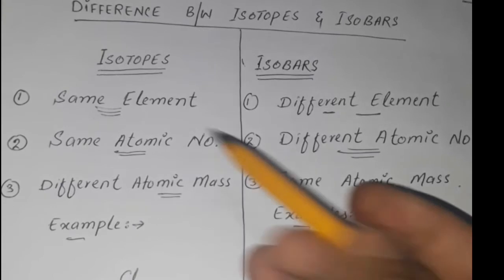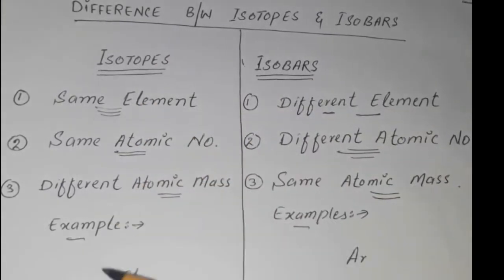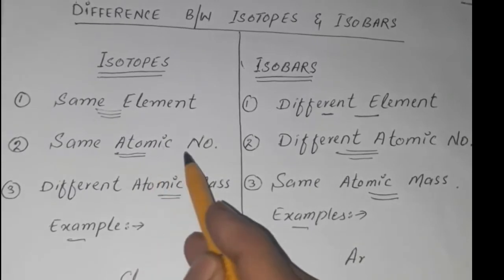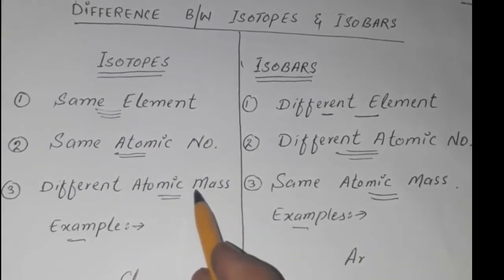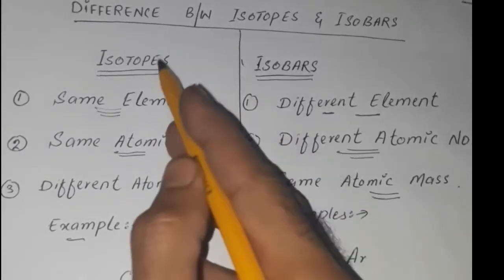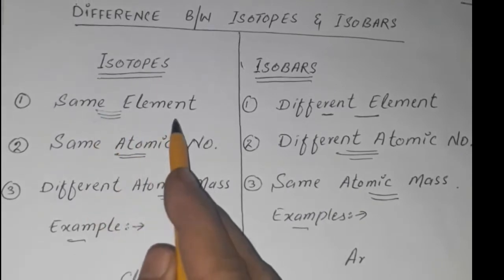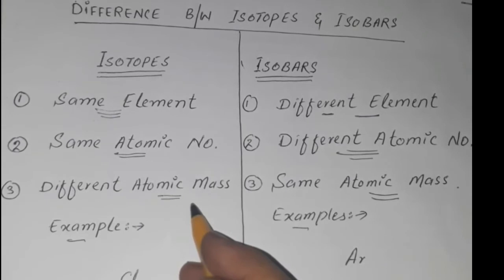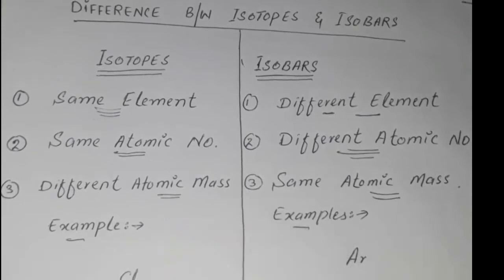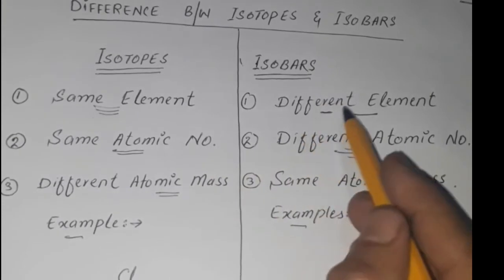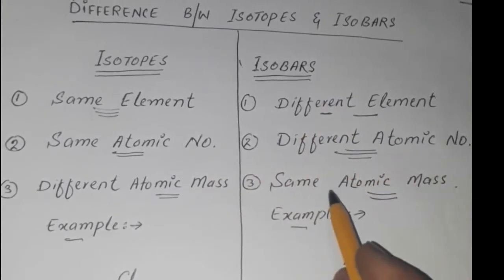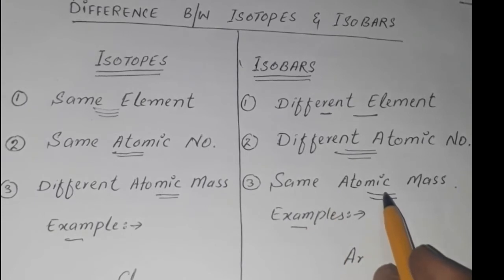Isotopes definition: Atoms of the same element having the same atomic number but different atomic mass are called isotopes. Isobars definition: Atoms of different elements having different atomic numbers but the same atomic mass are called isobars.